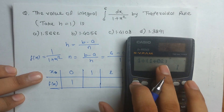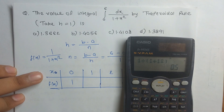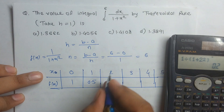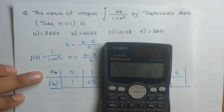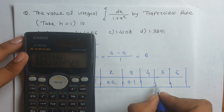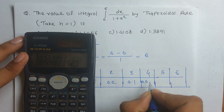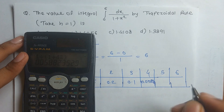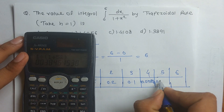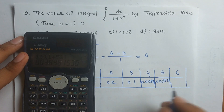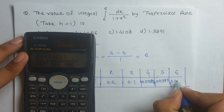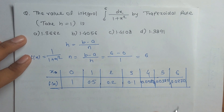Continuing to fill the table: for x = 2, f(2) = 1/(1 + 4) = 0.2; for x = 3, f(3) = 1/(1 + 9) = 0.1; for x = 4, f(4) = 1/(1 + 16) ≈ 0.0588 (rounded to 4 digits); for x = 5, f(5) = 1/(1 + 25) ≈ 0.0385 (rounded to 4 digits); for x = 6, f(6) = 1/(1 + 36) ≈ 0.0270.